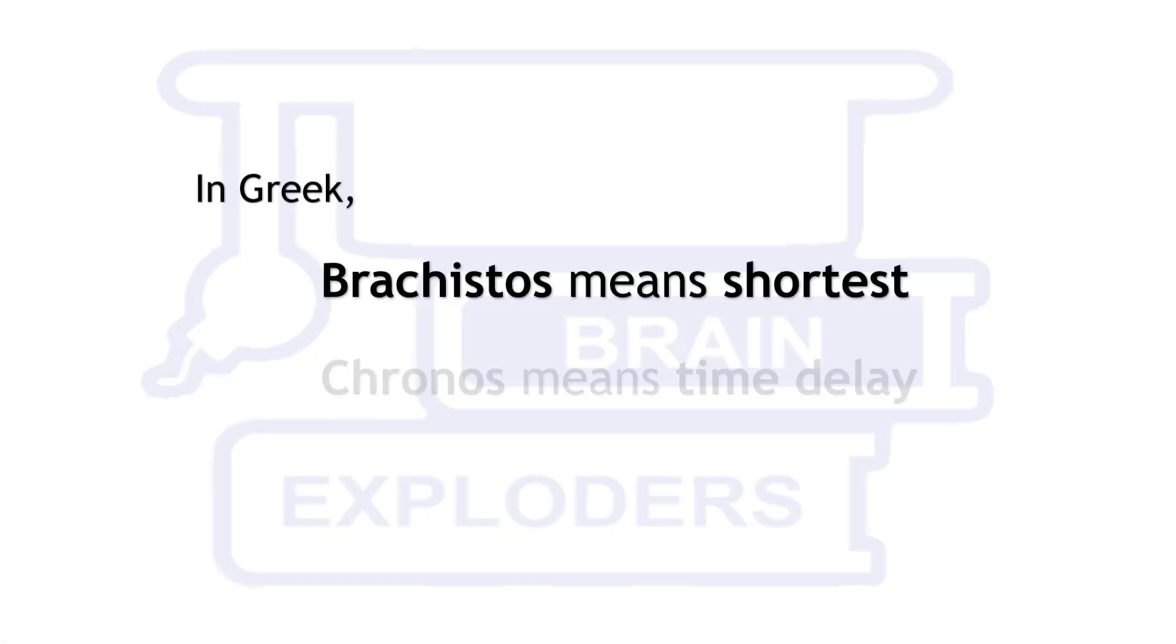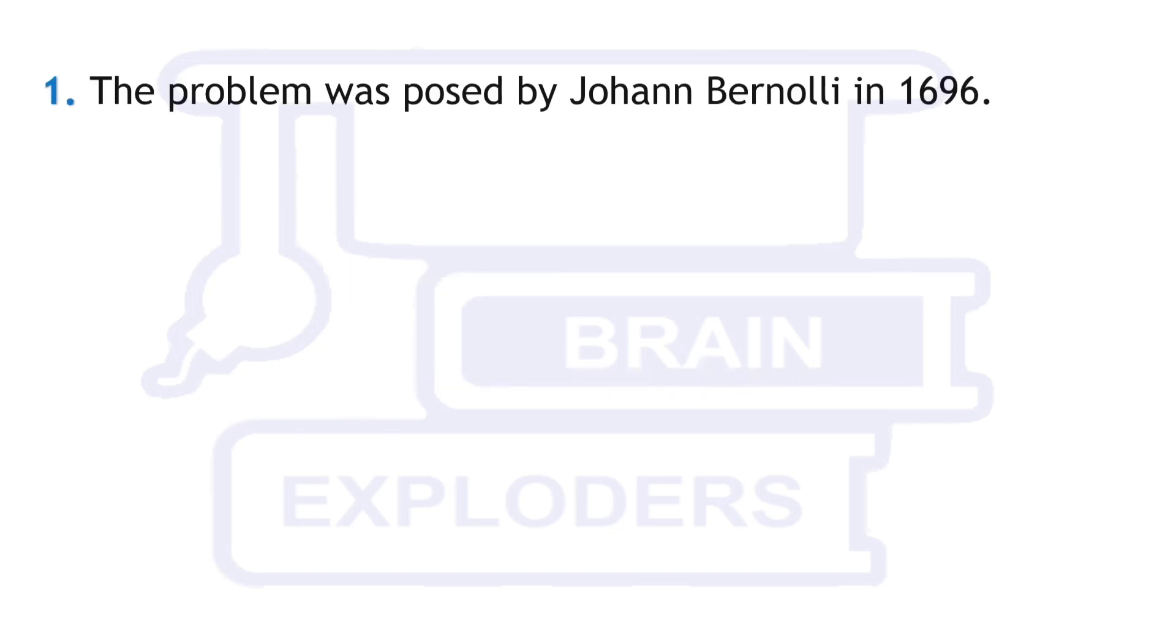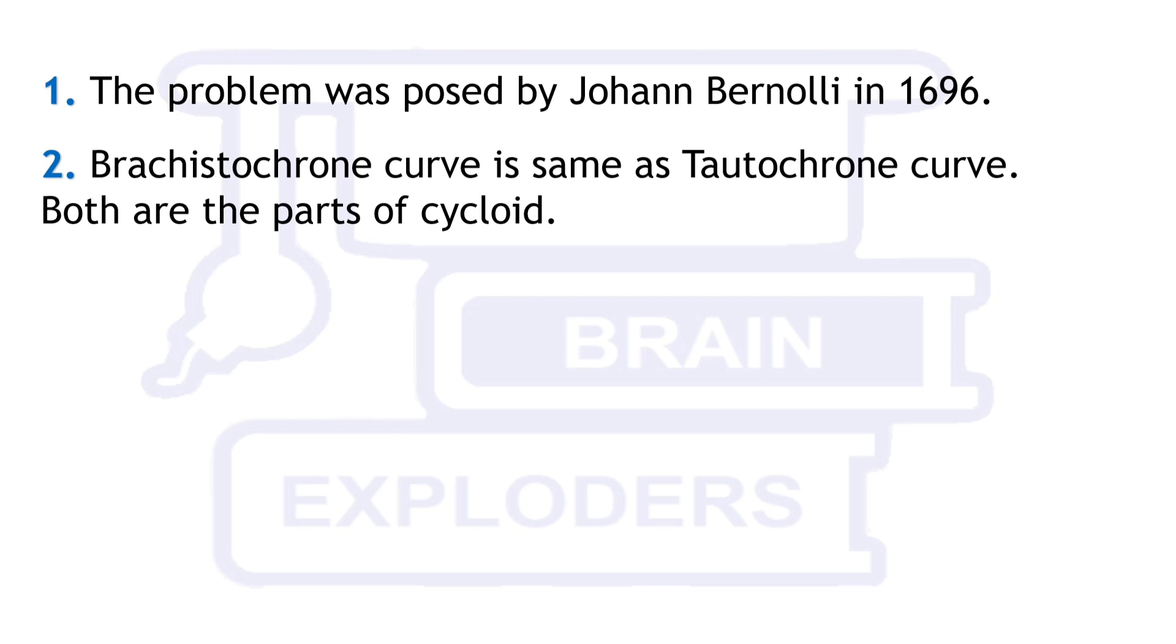The word Brachistochrone comes from Greek where Brachistos means shortest and Kronos means time delay. The problem was posed by Johann Bernoulli in 1696. The curve formed is called Brachistochrone curve and its shape is same as Tautochrone curve. We will discuss it in another video.